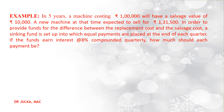Next example: in 5 years a machine costing 1 lakh rupees will have a salvage value of Rs 10,000. A new machine at that time is expected to sell for Rs 1 lakh 31,500. In order to provide funds for the difference between the replacement cost and the salvage cost, a sinking fund is set up into which equal payments are placed at the end of each quarter. If the fund earns interest at a rate of 8% compounded quarterly, how much should each payment be?